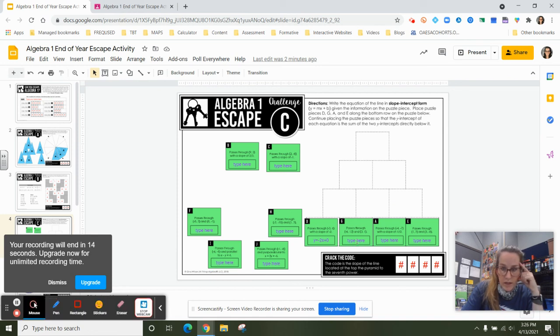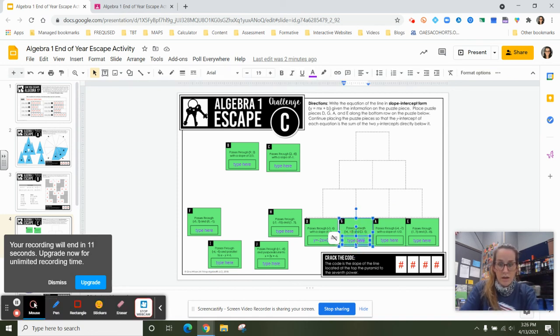I can grab my little pointer tool here. So y is equal to negative 4 thirds x times x plus 5. And it says use the y inner.